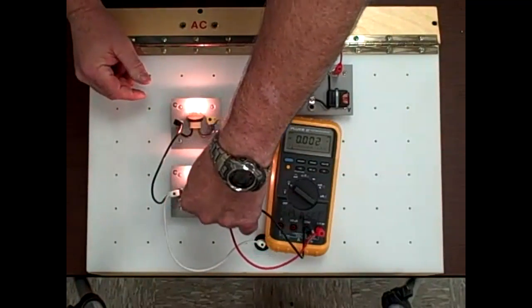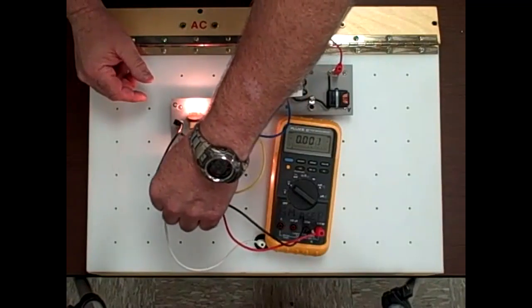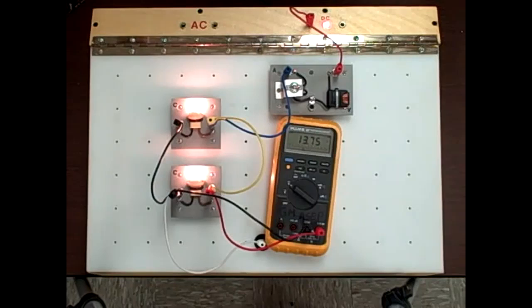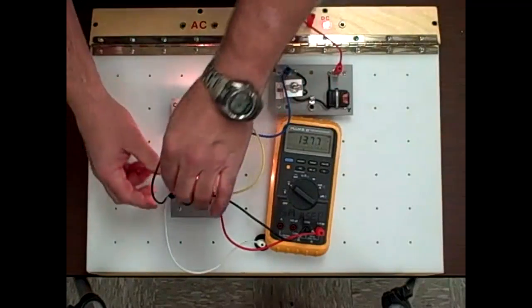And when we pull out and go down to the other bulb that's parallel, we have 13.75. It's proof that all the branches of a parallel circuit are exposed to the same source voltage.